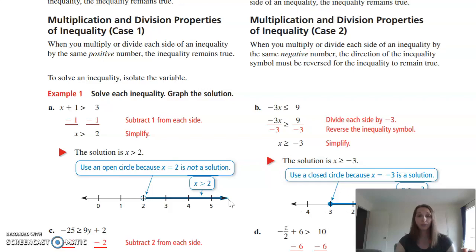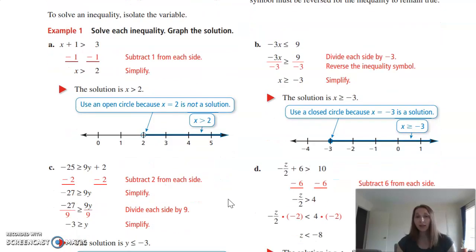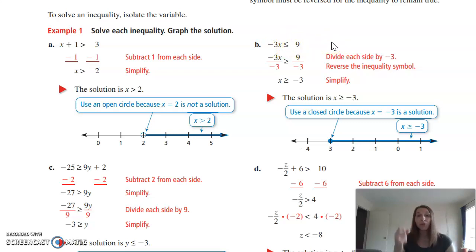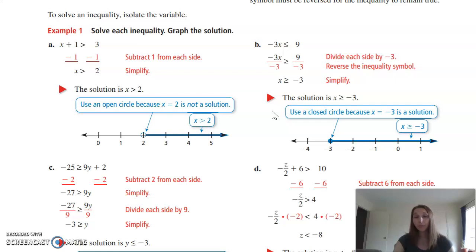Example B: -3x ≤ 9. To get X by itself, divide each side by -3. Because we are dividing by a negative, we must flip the inequality symbol — but it still remains 'equal to.' So -3x ≤ 9 becomes X ≥ -3. On the number line, we use a closed circle at -3 because X is greater than or equal to -3, and shade to the right toward 0, since those numbers are bigger.